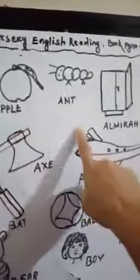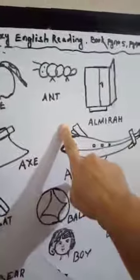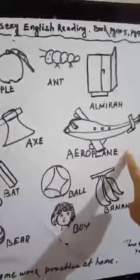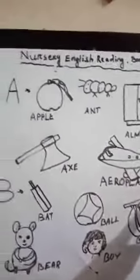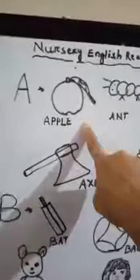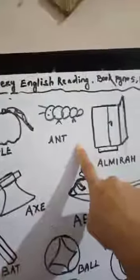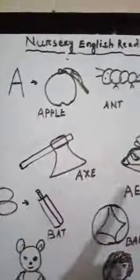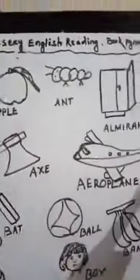A for Apple, A for Aunt, A for Almera, A for Arts, A for Aeroplane. Again: A for Apple, A for Aunt, A for Almera, A for Axe, A for Aeroplane.